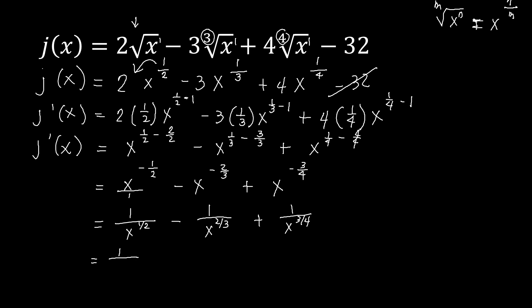Converting to radical form: 1 over x to the power of 1 half becomes 1 over the square root of x, since 2 is the denominator. Then minus 1 over the cube root of x squared, since 3 is the denominator and the numerator is 2 — so the exponent of x is 2. Then plus 1 over the fourth root of x cubed, since the denominator is 4 and the numerator is 3.